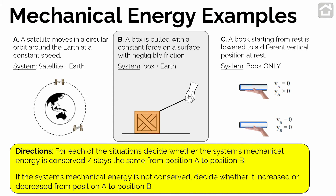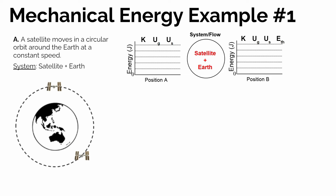Let's quickly look at three specific situations to think through what's going on with the mechanical energy of specific systems: one for a satellite orbiting the earth at a constant speed, another for a box being pulled with some tension, and the last one is a book lowered from some high height to a lower height. In each situation, we're going to think about whether the mechanical energy — the sum of kinetic energy and potential energy — is staying the same, increasing, or decreasing.